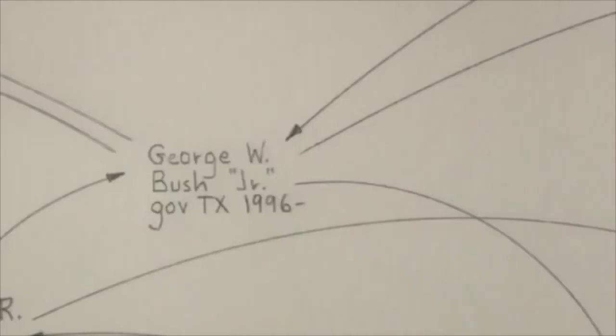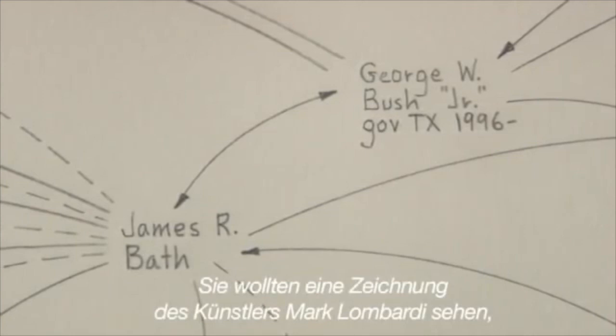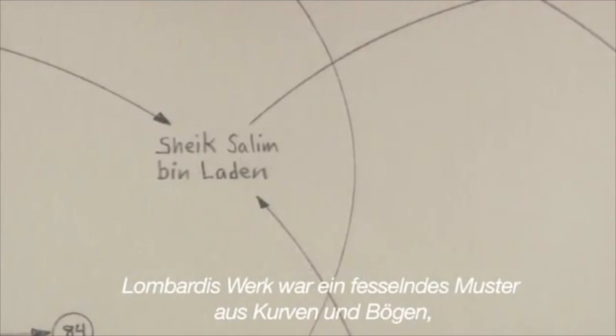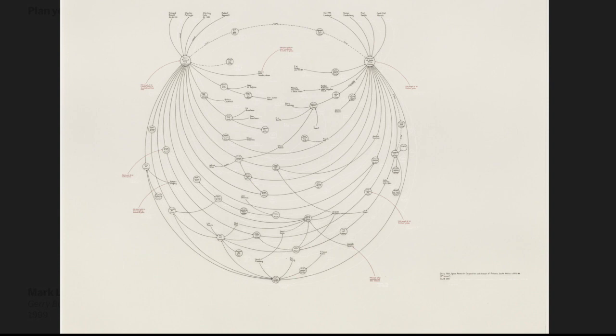A few weeks after September 11th, an FBI agent called the Whitney Museum of American Art and asked to see a drawing on exhibit there. The piece was by Mark Lombardi, an artist who died by his own hand several years ago. Using pencil, Lombardi had created an intricate pattern of curves and arcs to illustrate the links between global finance and international terrorism.